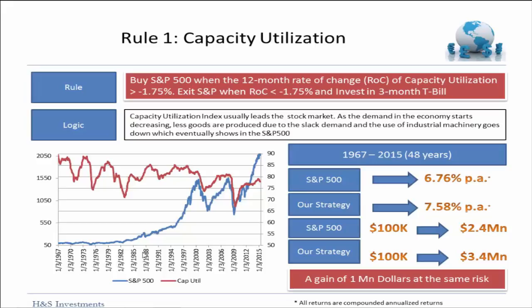From 1967 to the present, our system produced a 7.58% return on investment versus the S&P which produced a 6.76% return on investment. Our system turns $100,000 into $3.4 million while the S&P turns $100,000 into $2.4 million — that's a gain of a million dollars with the same risk.